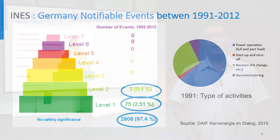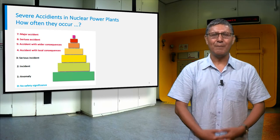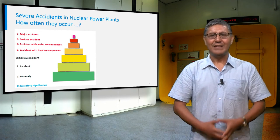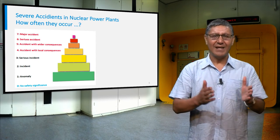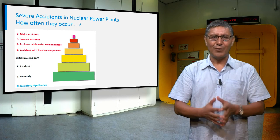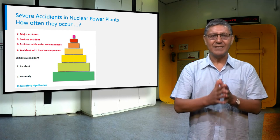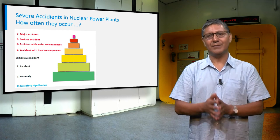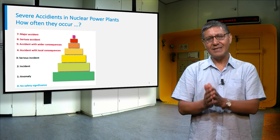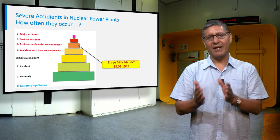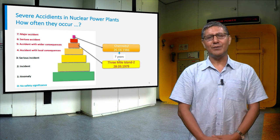Unfortunately, there is no risk-free technology. Despite safety provisions in the design and proper operation of a nuclear power plant, accidents still happen. The three biggest accidents are Three Mile Island, Chernobyl, and Fukushima.